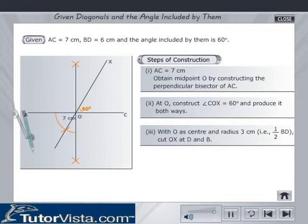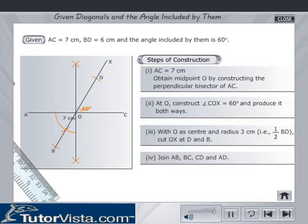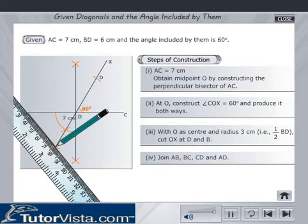With O as center and radius 3 cm, that is half of BD, cut OX at D and B. Join AB, BC, CD and AD.